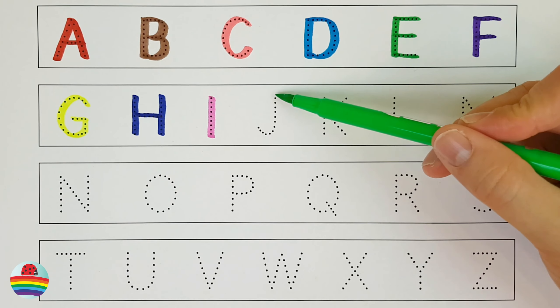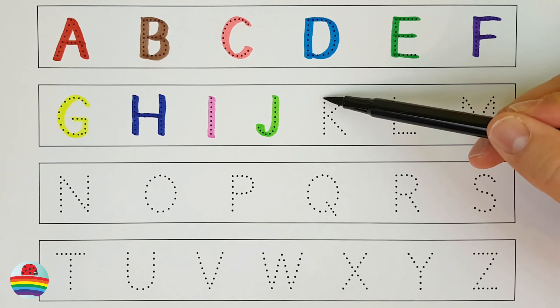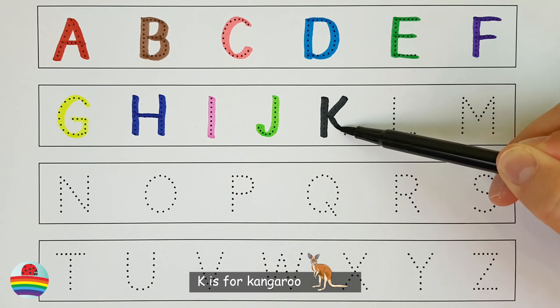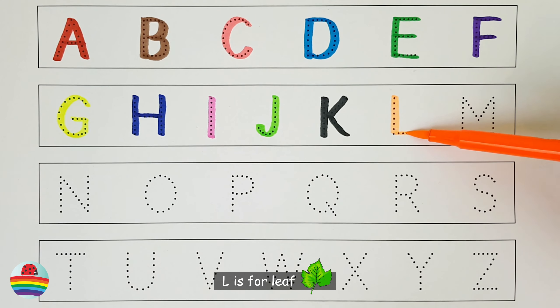J is for Jaguar, J. K is for Kangaroo, K. L is for Leaf, L.